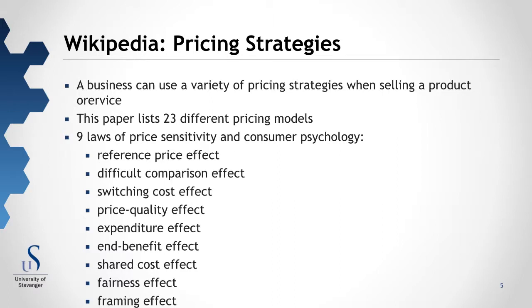The nine laws of price sensitivity are: the reference price effect, the difficult comparison effect, switching cost effect, price quality effect, expenditure effect, end benefit effect, shared cost effect, fairness effect, and framing effect. There are a lot of different options, and we see all of them referred to and applied when it comes to internet and services.